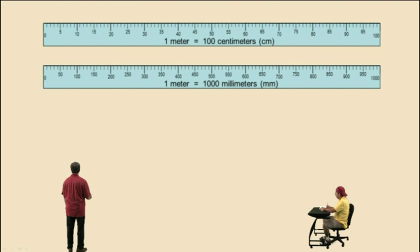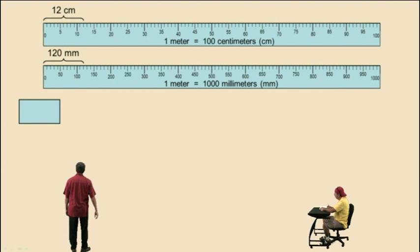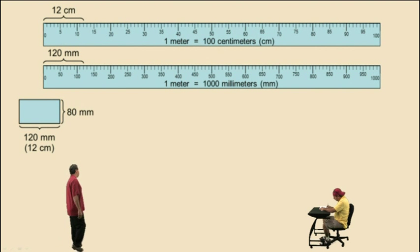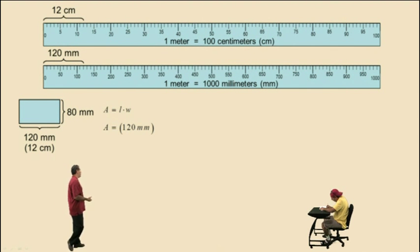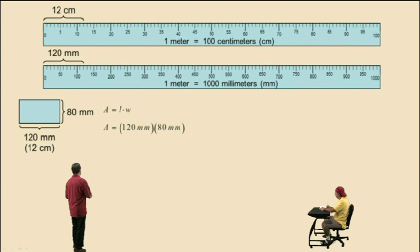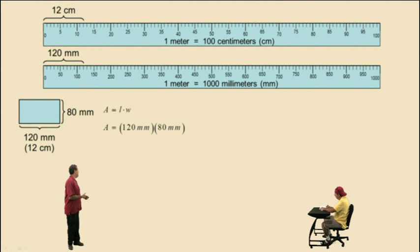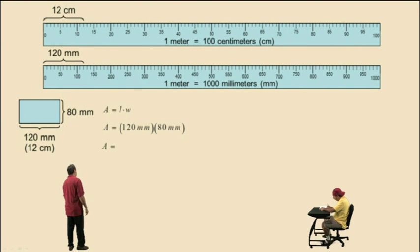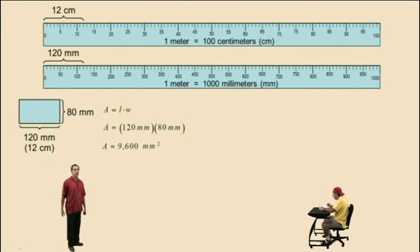Now let's take a look at these meter sticks. This is 12 centimeters, which is also equivalent to 120 millimeters. Let's say this rectangle has a length of 120 millimeters and a width of 80 millimeters. Notice our dimensions are both in millimeters — you cannot mix 12 centimeters with 80 millimeters in one calculation. If you use millimeters for length, you must use millimeters for width as well. 120 times 80 is 9,600, and millimeters times millimeters is millimeters squared. Our answer is 9,600 square millimeters.